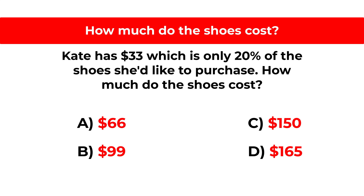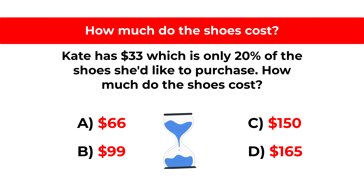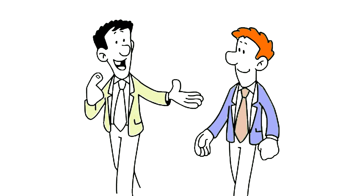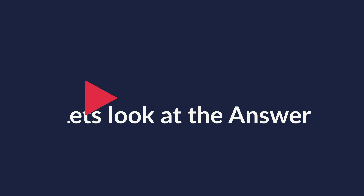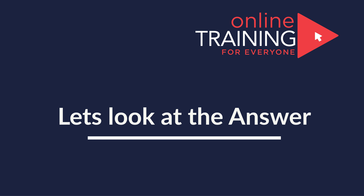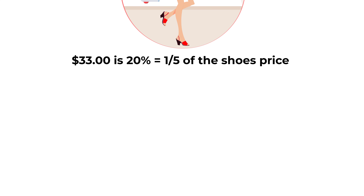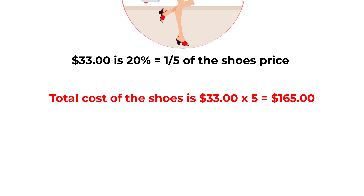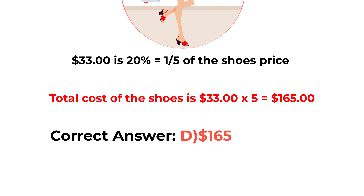Can you calculate the answer? Give yourself 10 to 30 seconds, depending how well you are with math and percentages. Let's go ahead and get to the correct solution together. The answer to this problem is very simple. $33 is 20%, or one-fifth, of the shoe's price. So the total cost of the shoes would be 33 multiplied by 5, which equals $165. So the correct answer here is Choice D, $165.